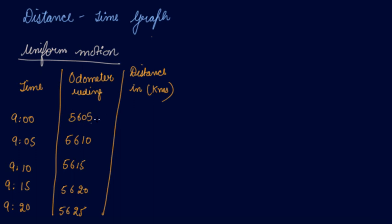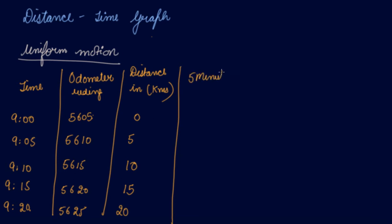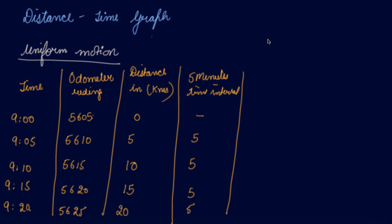At 9am the odometer reading was 5,605, so no distance has been covered — 0. Then after 5 minutes it moved to 5,610, so 5 kilometers covered. Then from there it moves another 5 kilometers to reach 10. After 15 minutes from 9am it has moved 15 kilometers, and at 9:20 it has traveled a total of 20 kilometers. So in every 5-minute interval, 5 kilometers is being covered — this is uniform motion.